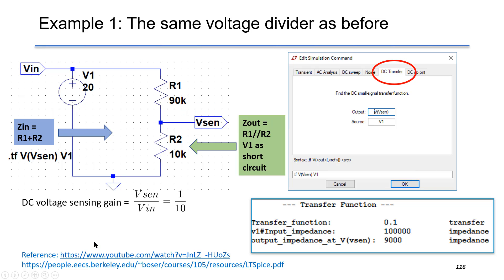This is the first example. Here we have the same voltage divider as shown before. VIn is the independent source. The DC voltage sensing gain Vsense is R2 over R1 plus R2, which is 1 over 10.